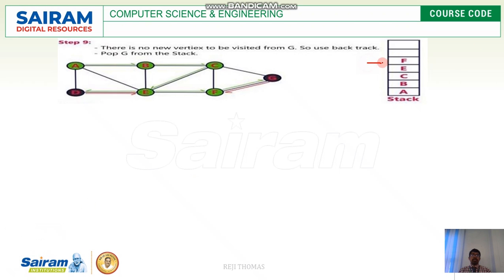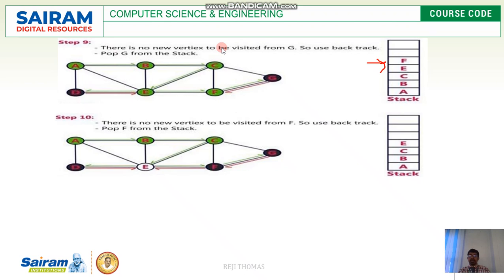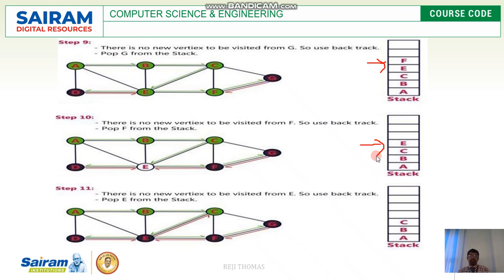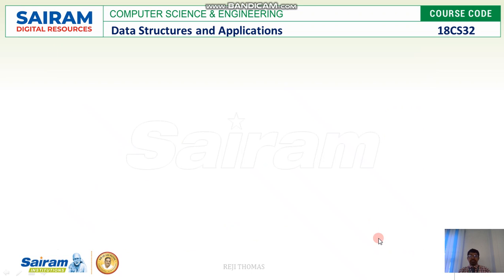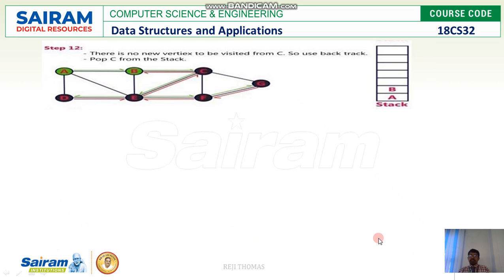When G is popped, F is again on top of the stack. There are no more vertices to be visited from F since all have been visited, so pop F. When F is popped, E is on top of the stack. There are no more vertices to be visited from E, so pop E. When E is popped, C is on top of the stack. There are no more vertices to be visited from C — all vertices are complete — so pop C.